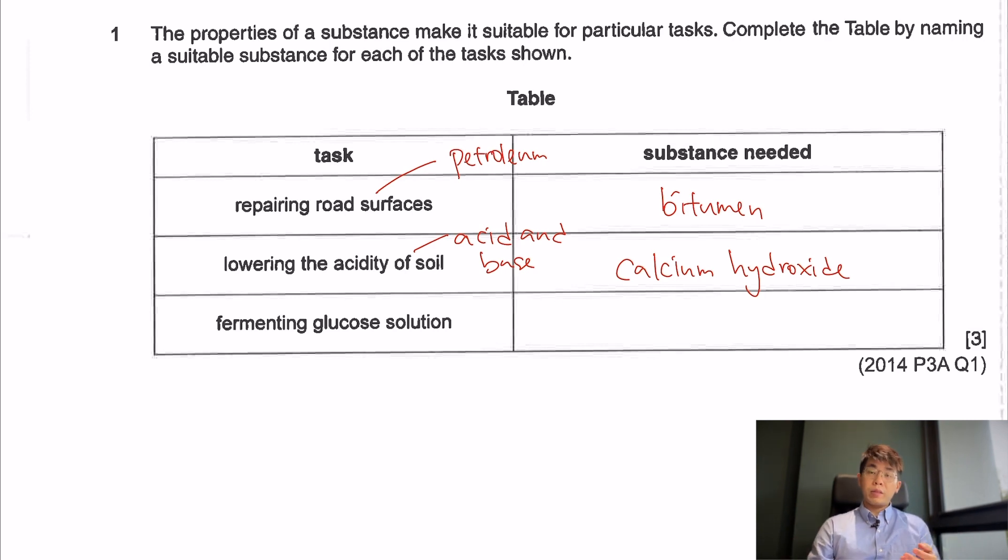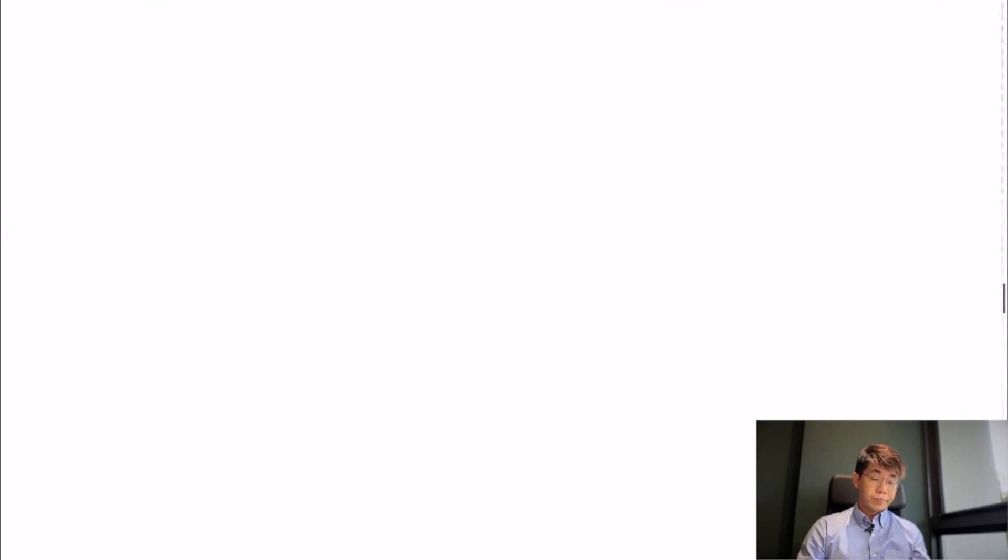And the last one, fermenting of glucose solution. This one is from your alcohol chapter. So what do I need to put in to cause the glucose solution to ferment? I need a yeast. These questions are very common when you need to look at different chapters. So the strategy is to think of which chapter it belongs to first. And then after that, you decide which part of the knowledge you need to use.